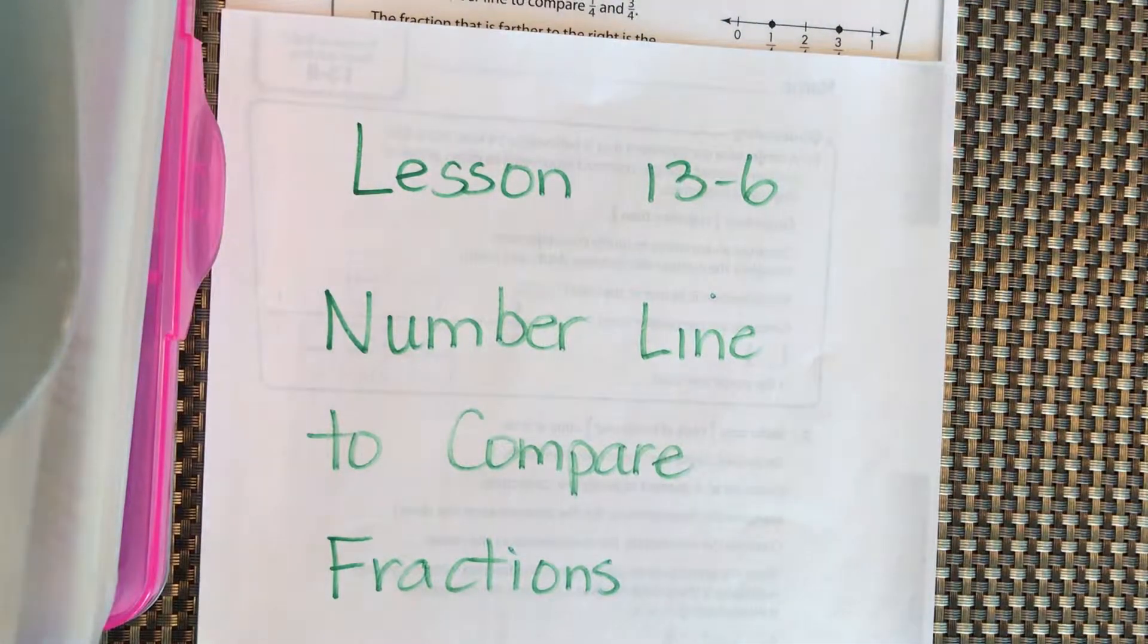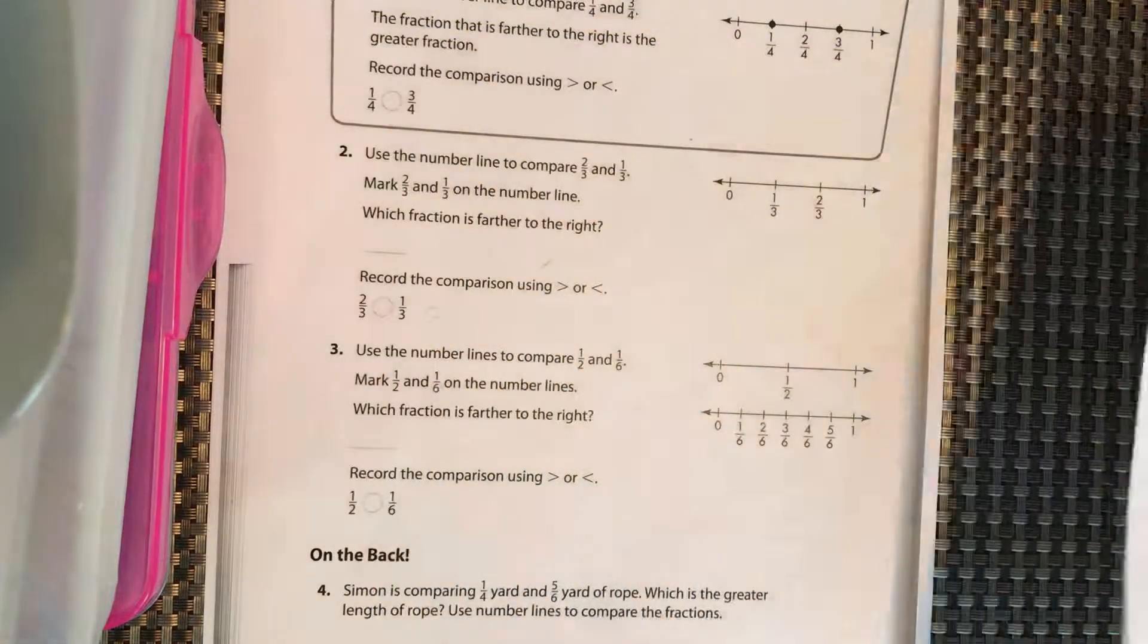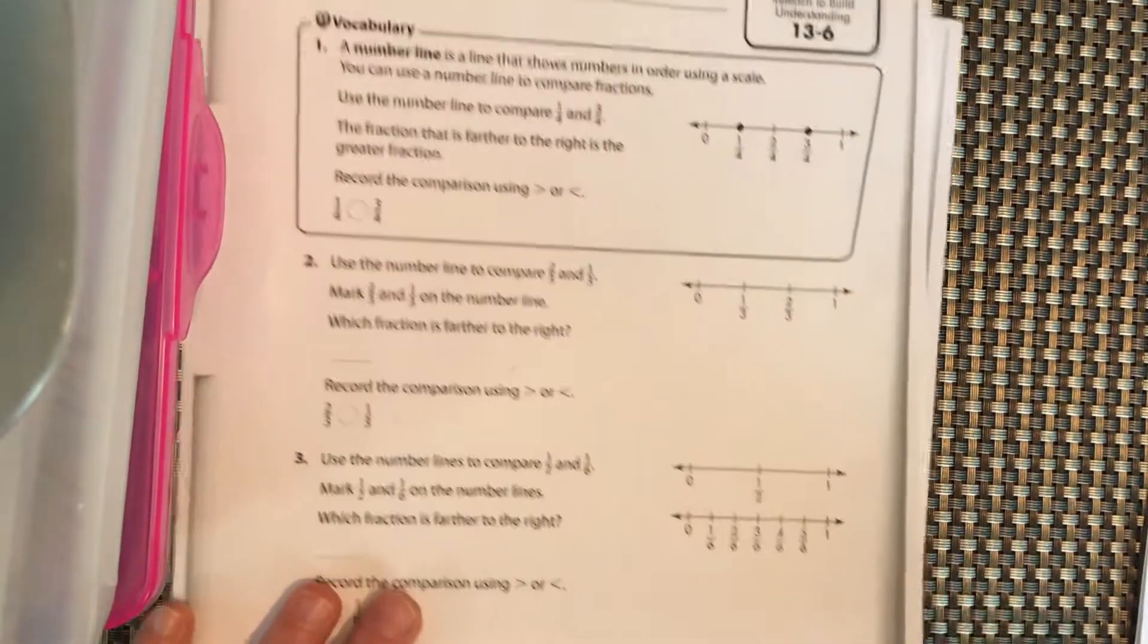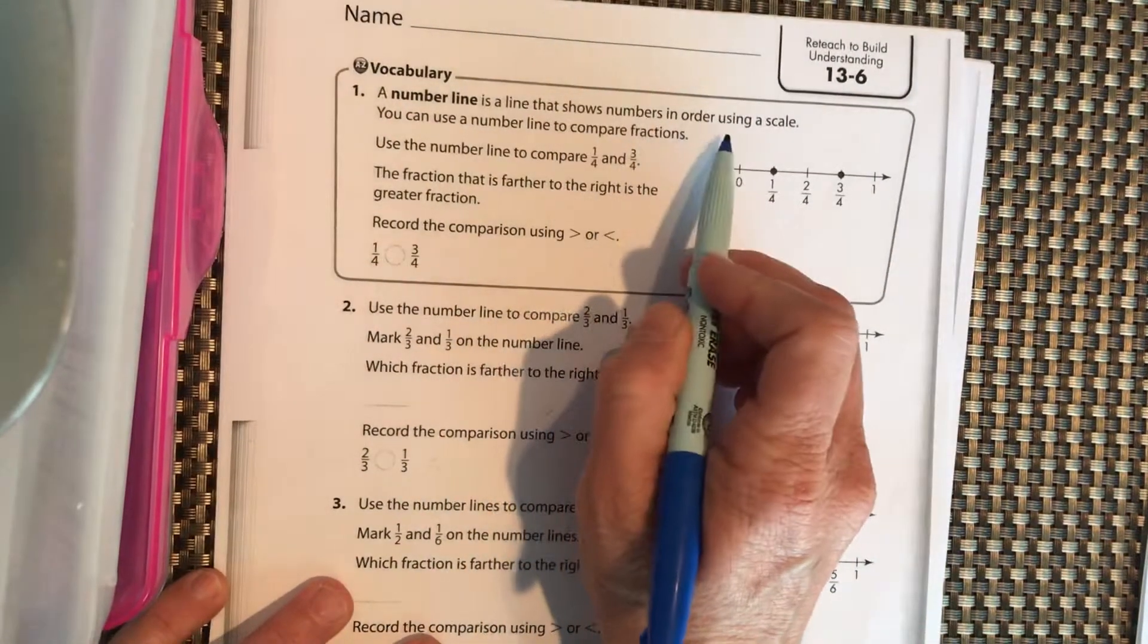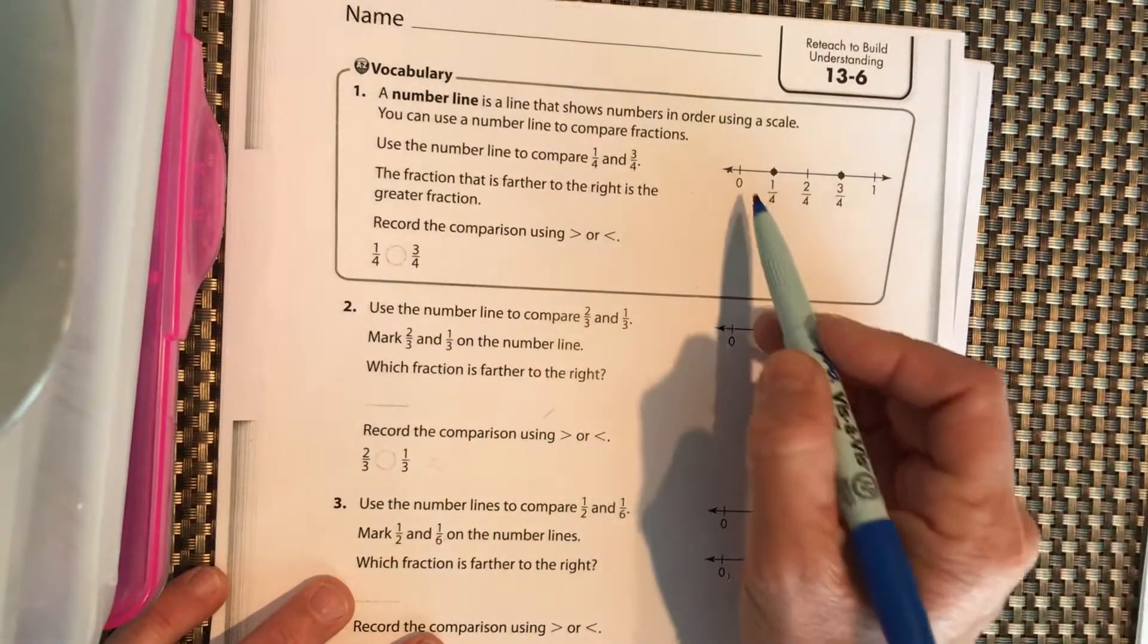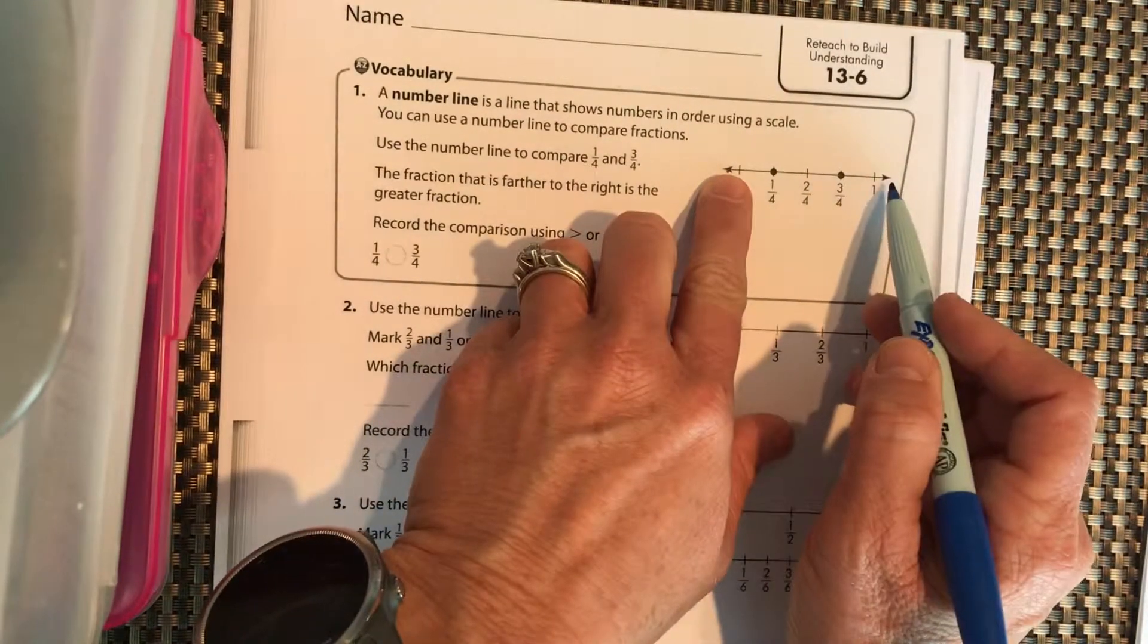Okay, lesson 13-6, using a number line to compare fractions. Let's take a look here at our sheet. A number line is a line that shows numbers in order using a scale. The scale, don't think of like a scale that you weigh yourself on, this is a scale means a number line, this is a way to measure.